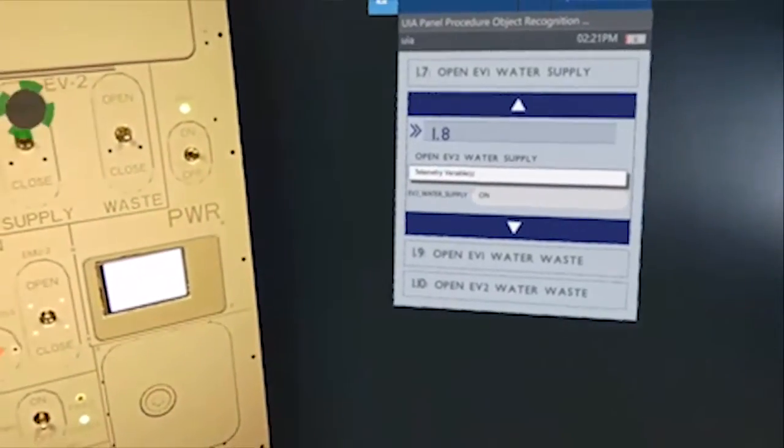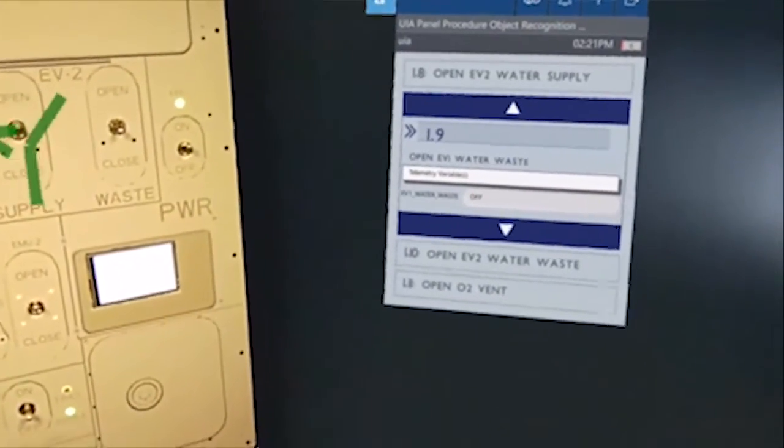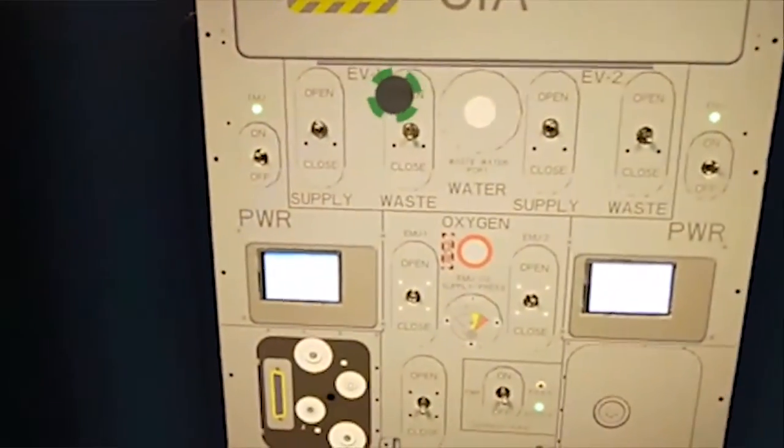Open that up. It's going to take me, again, directly to 1.9. Now I need to open up the EV1 water waste valve. Again, highlighted. Very intuitive. Very easy.